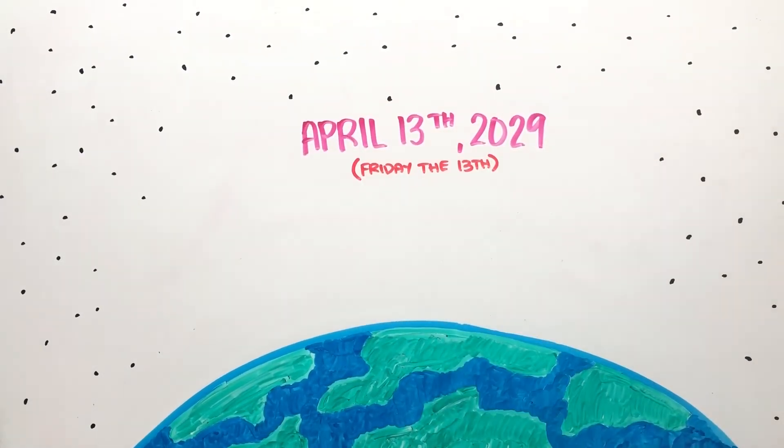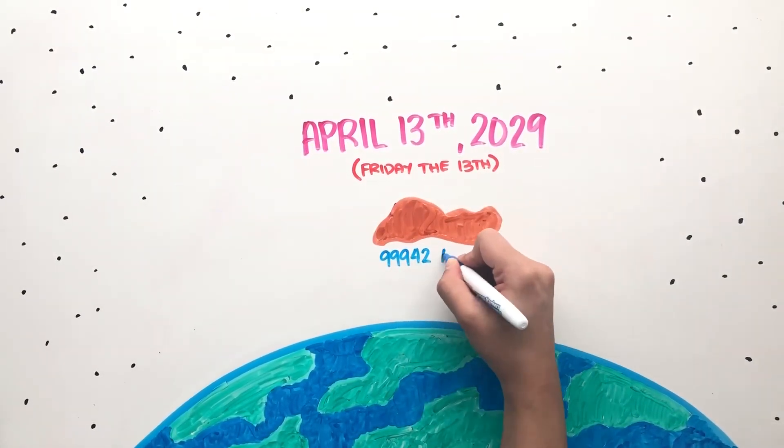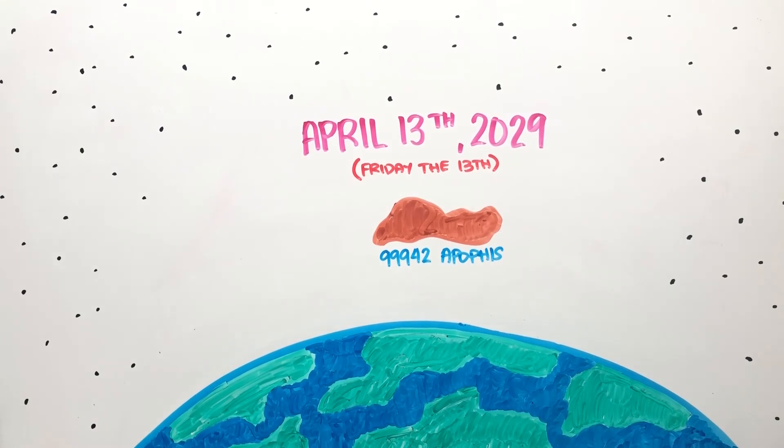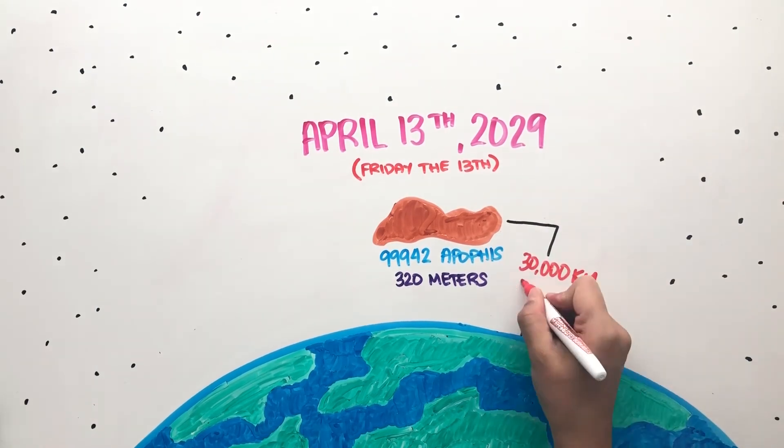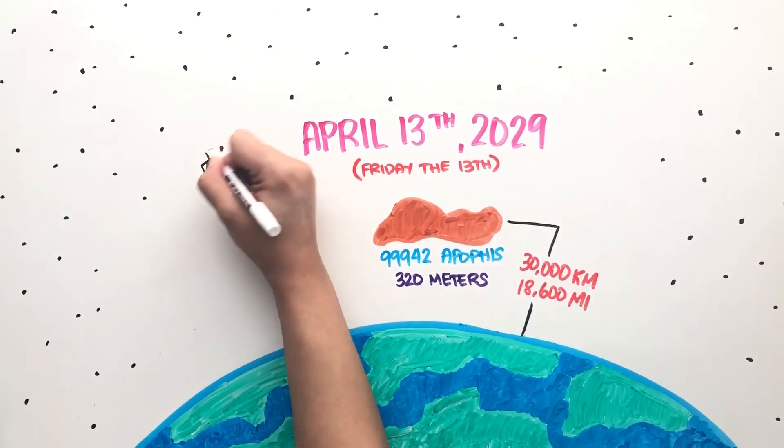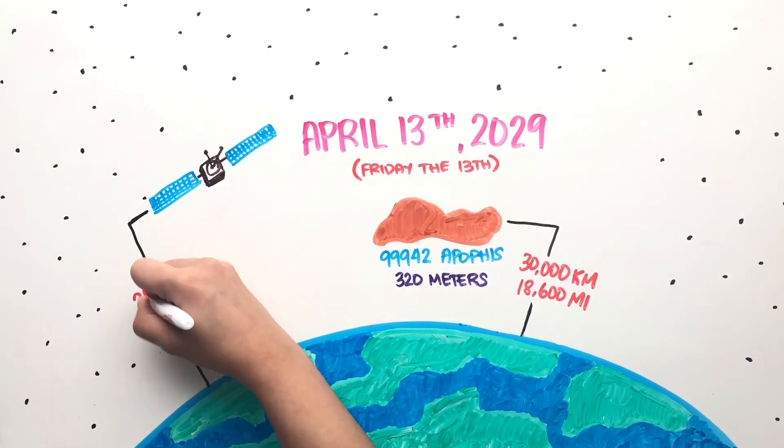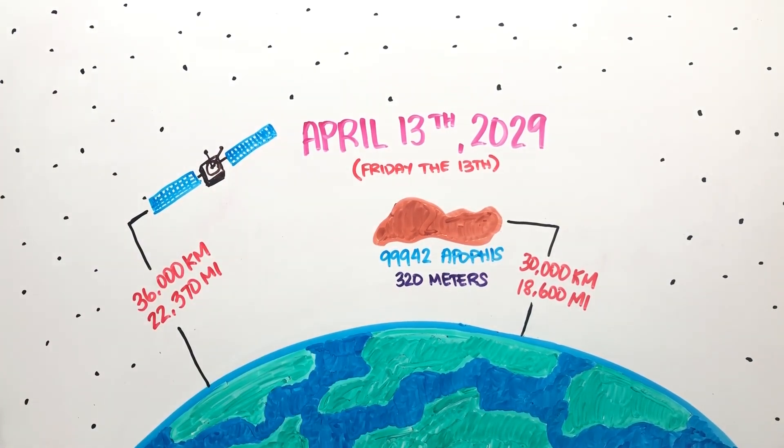On April 13, 2029, 99942 Apophis, an asteroid about 320 meters wide, will pass by the Earth closer to our satellites at 30,000 kilometers above ground. It is the size of a football field and would cause global disaster if it ever hit the Earth.